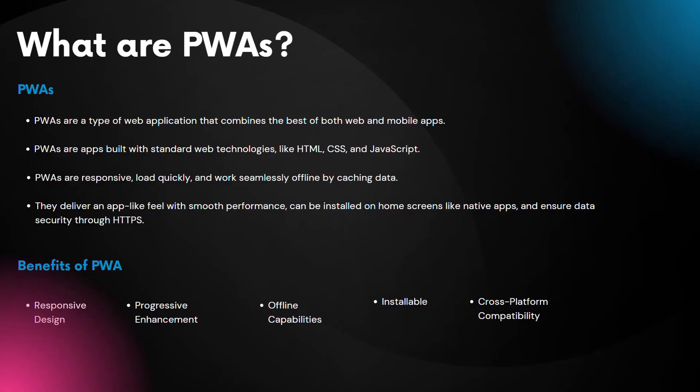What are PWAs? PWAs or progressive web apps are a type of web application that combines the best of both web and mobile apps. Progressive web apps are built using standard web technologies such as HTML, CSS and JavaScript, which allows developers to create PWAs using familiar web development tools and languages.